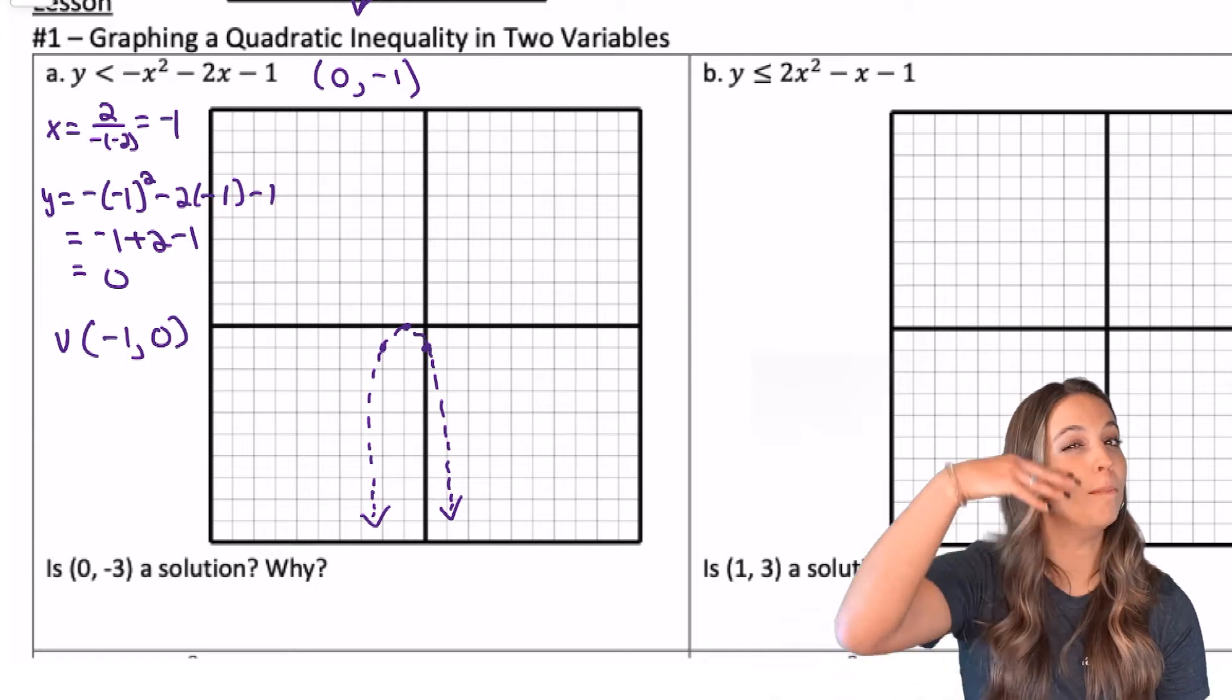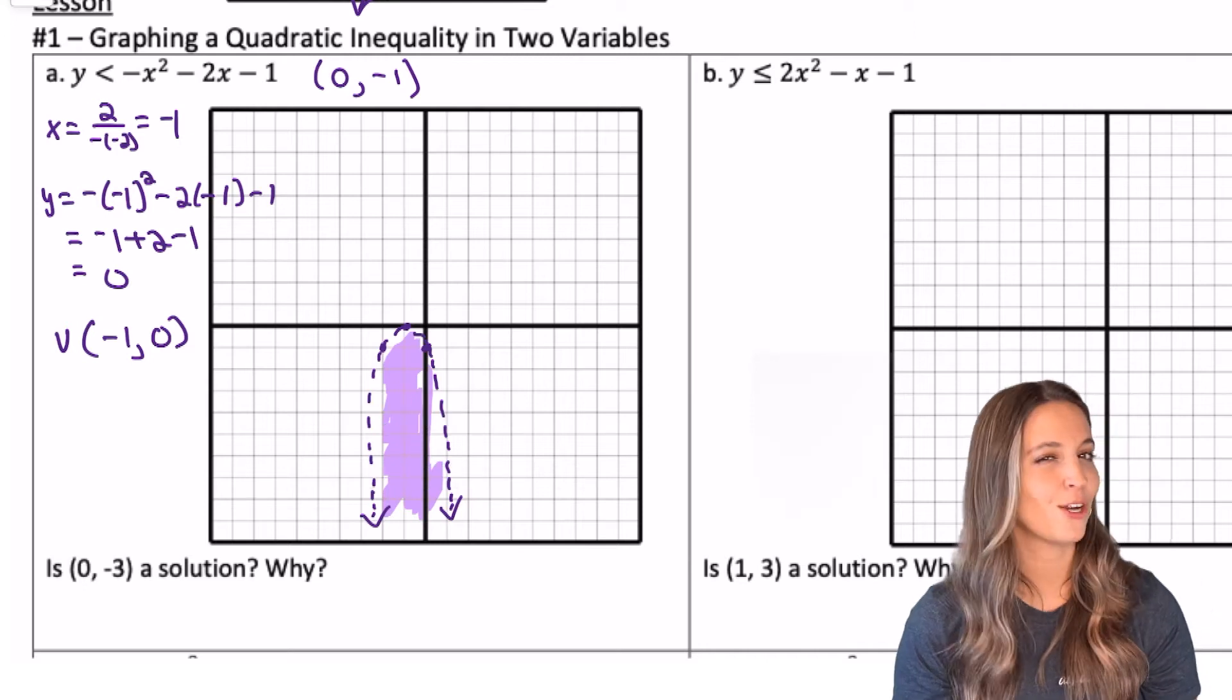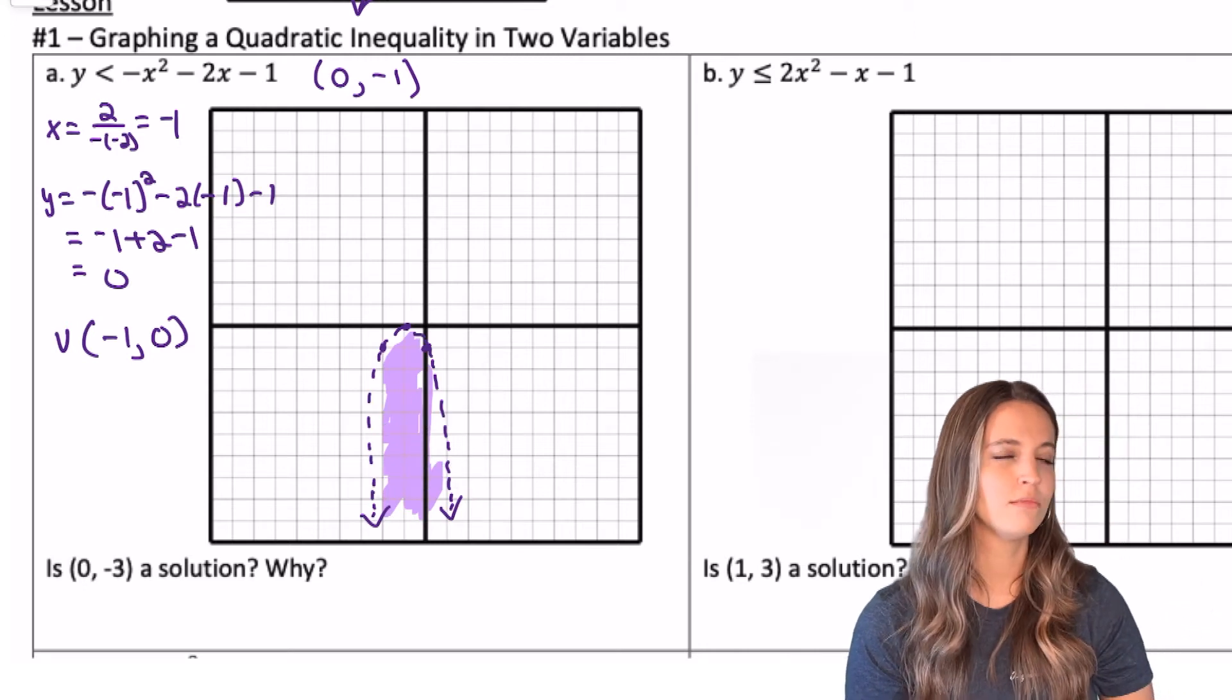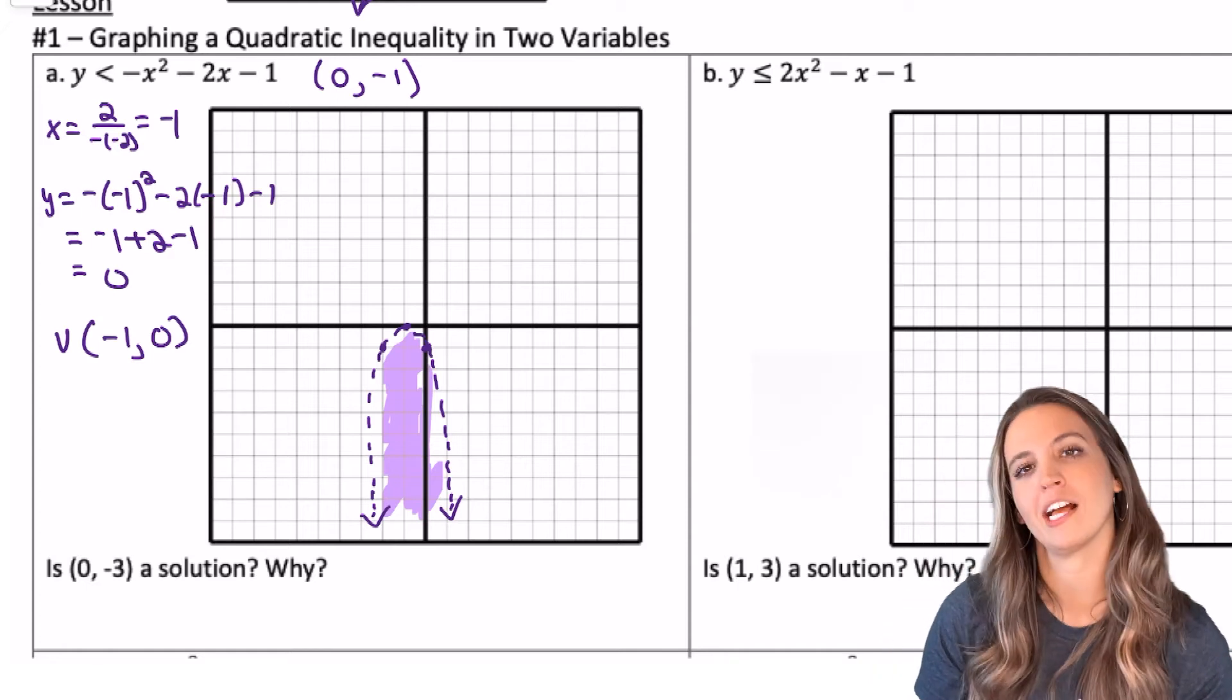Am I going to shade above this parabola or down below? Below, less than. Is 0, negative 3 a solution? Well, yeah, it's in my shaded region, but let's double check algebraically. To do that, we're going to plug in the x-coordinate of 0 and the y-coordinate of negative 3 to our original inequality.